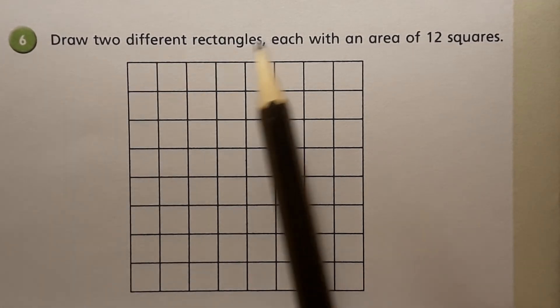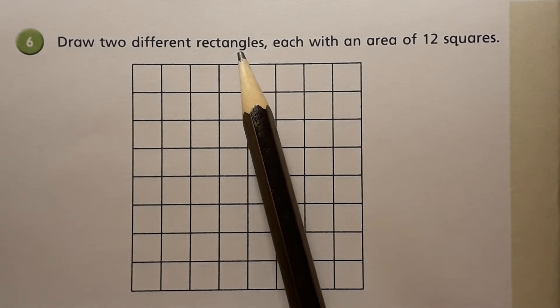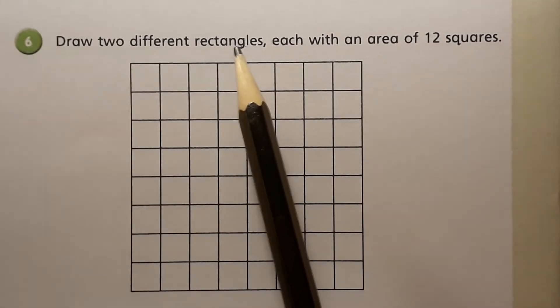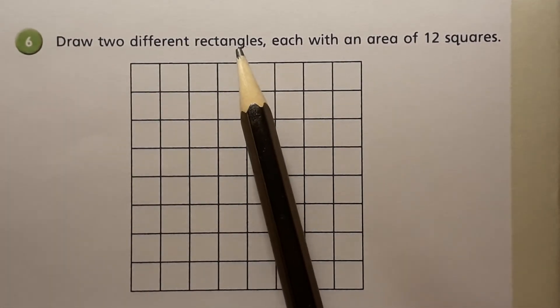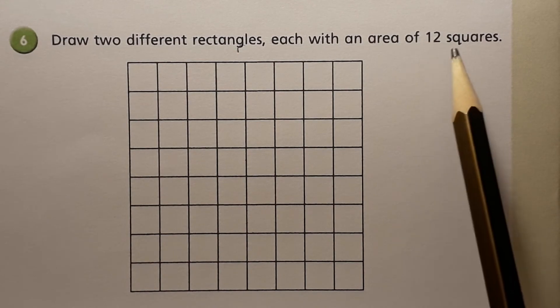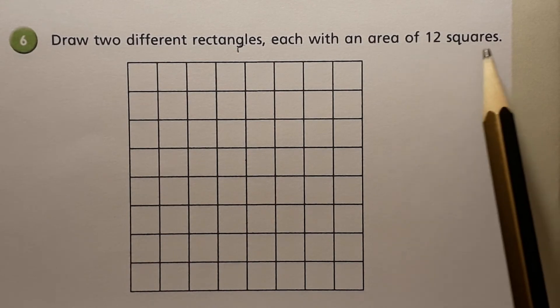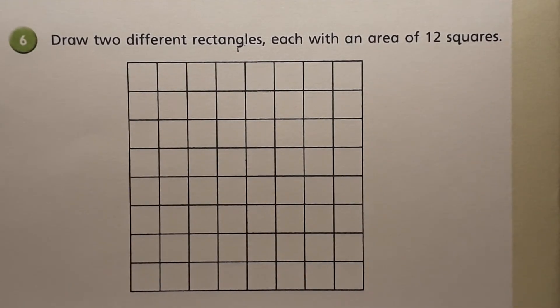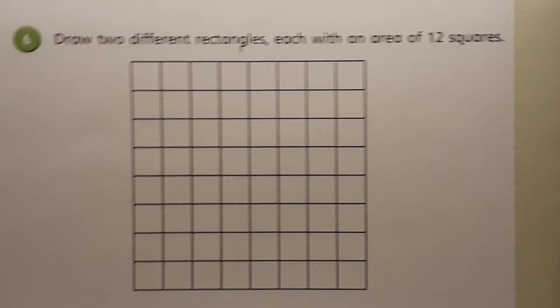On to number six: draw two different rectangles, each with an area of 12 squares. That's the key to this question — two different rectangles — and that shouldn't be too hard.